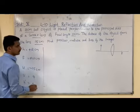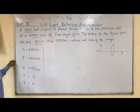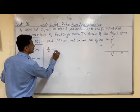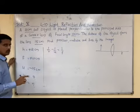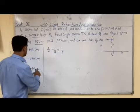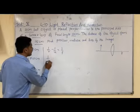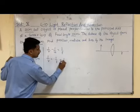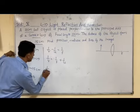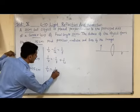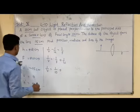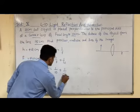This is the case of a lens, so we use the lens formula: 1/v minus 1/u equals 1/f. We rearrange to find v: 1/v equals 1/f plus 1/u. Substituting values: 1/v equals 1/10 plus 1/(−15), which gives us 1/v equals 1/10 minus 1/15.